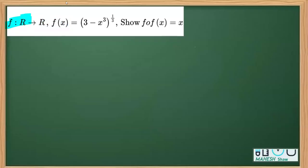This question from the chapter on functions says: let f be a function from R to R where f(x) is equal to (3 - x³)^(1/3). We need to show that f(f(x)) is equal to x.